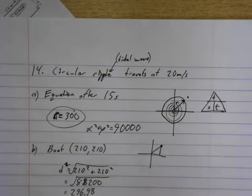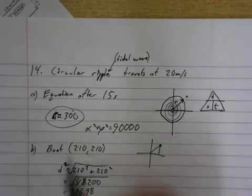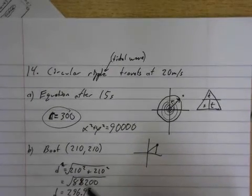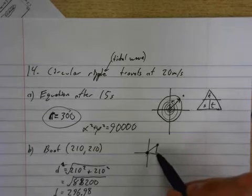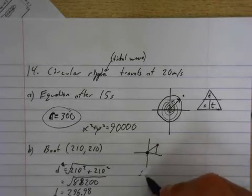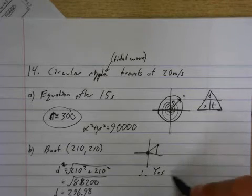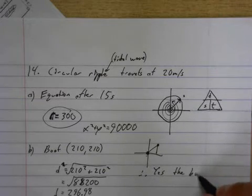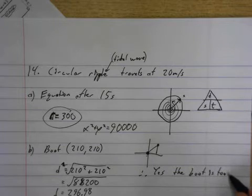210 squared plus 210 squared is the square root of 88,200, and the square root of that answer is 296.98. That is really close to 300, but it is not quite 300. The distance from the origin of this thing to the boat is only 296, and the wave's already at 300. So therefore, yes,